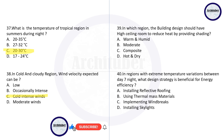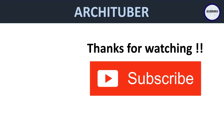Question thirty-nine: in which region should building design have a high ceiling room to reduce heat by providing shading? In a moderate climate. Question forty: in regions with extreme temperature variations between day and night, what strategy is beneficial for energy efficiency? The correct answer is using thermal mass materials. So these were all the questions for your climatology question bank.